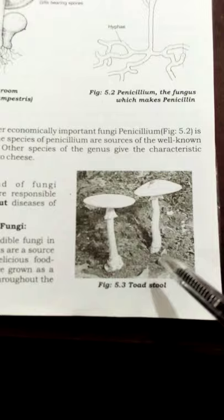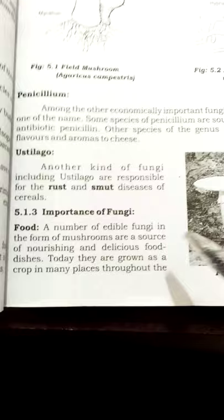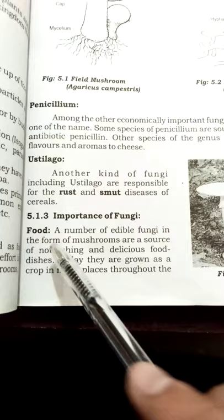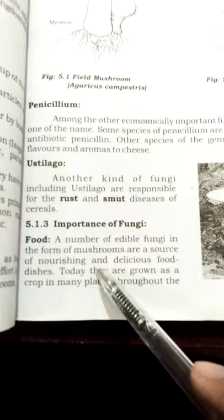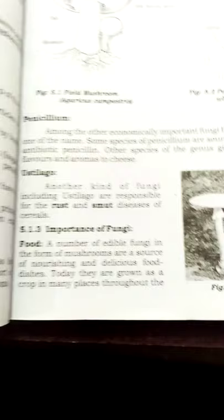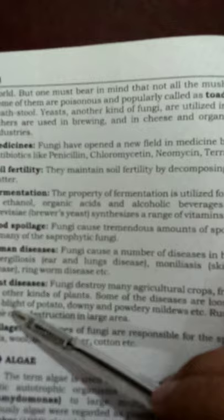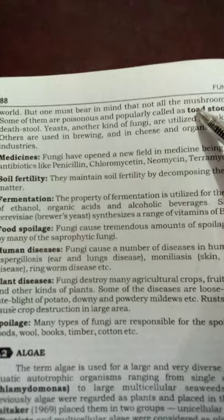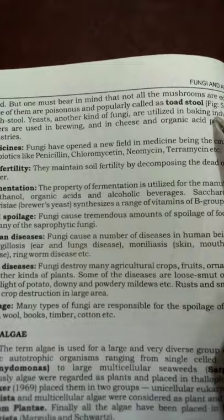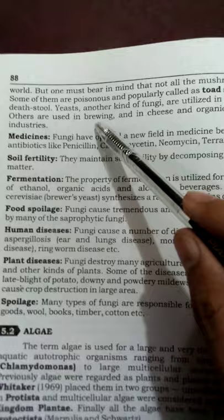Now let's discuss the importance of fungi. First, regarding food: a number of edible fungi in the form of mushrooms are a source of nourishing and delicious food. Today they are grown as a crop in many places throughout the world. However, the toadstool is a poisonous mushroom — not all mushrooms are edible. Yeast is used in industry, particularly in baking — bread making and cake making.